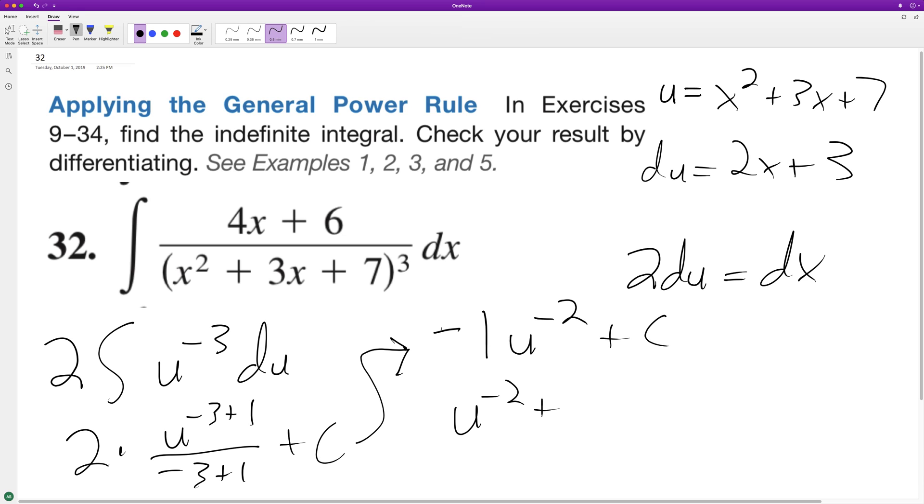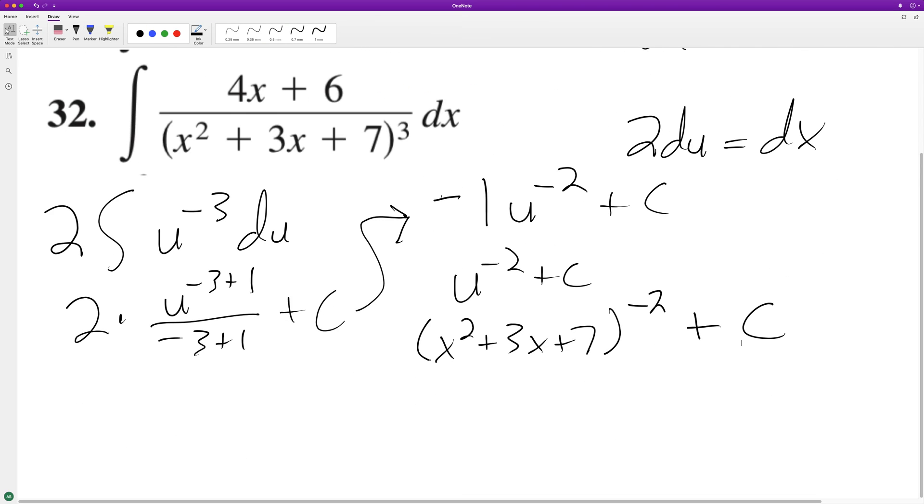So u raised to negative two plus c, we sub back in. So we end up with x squared plus three x plus seven raised to the negative two plus c. So this is our final result, but we'll go ahead and check it.